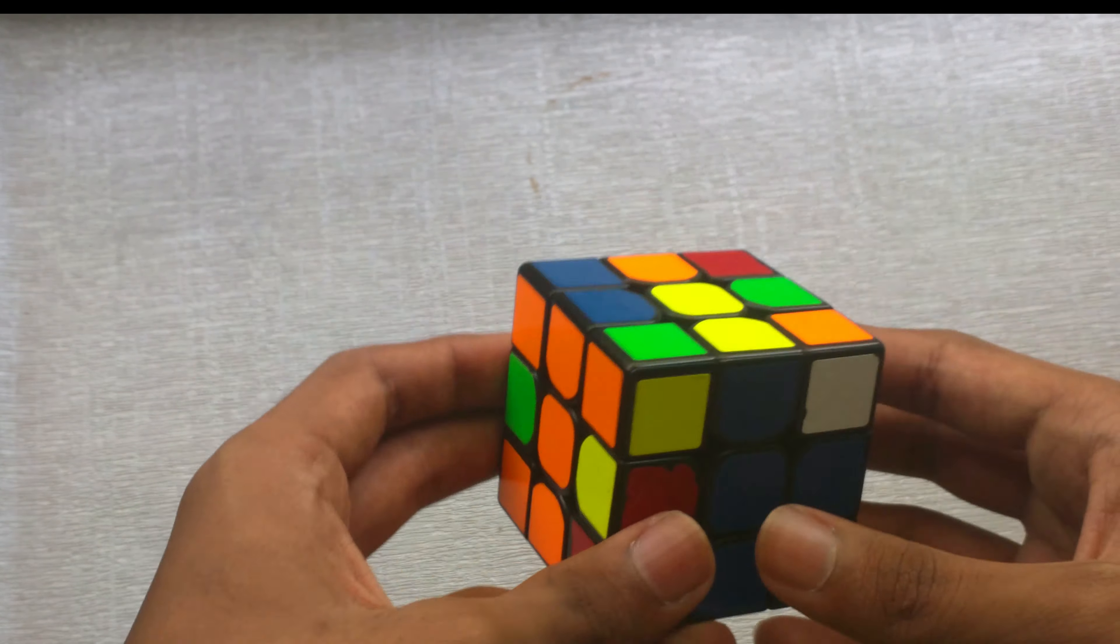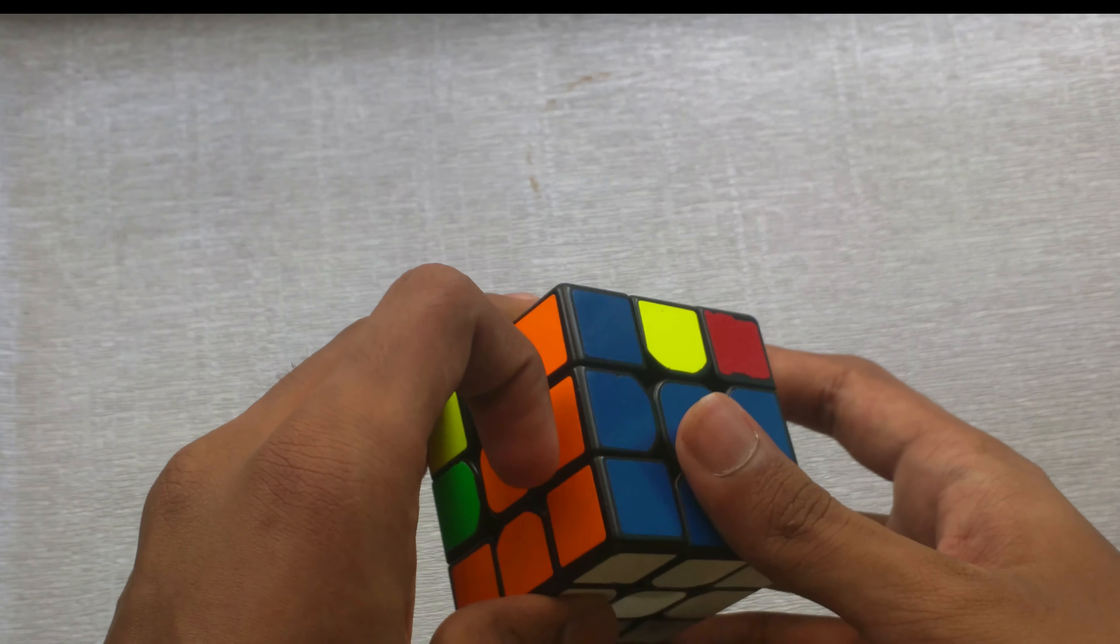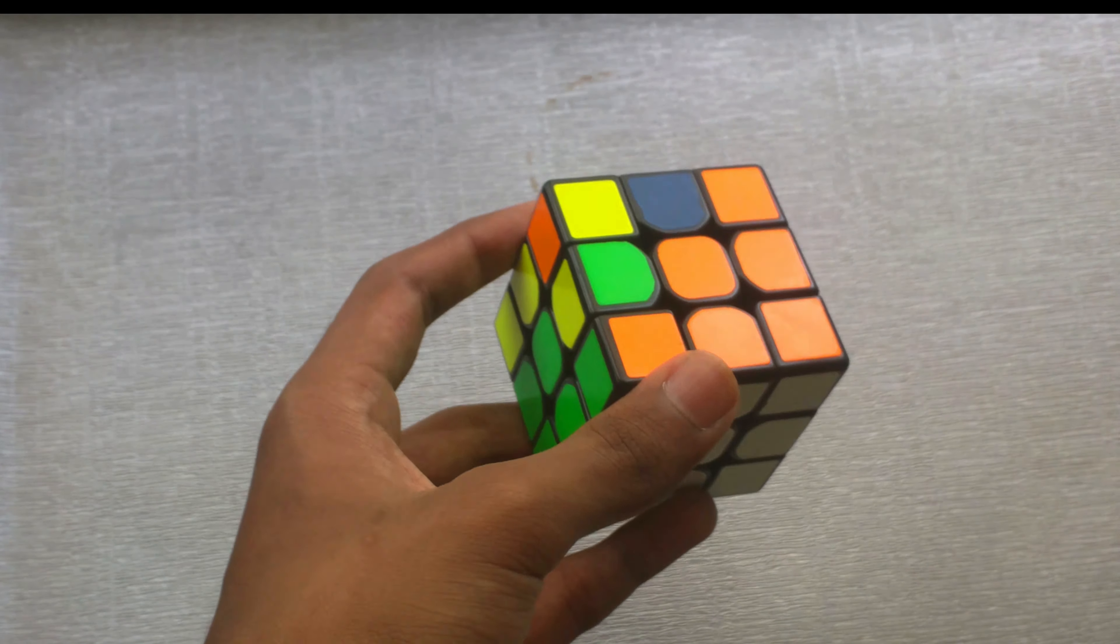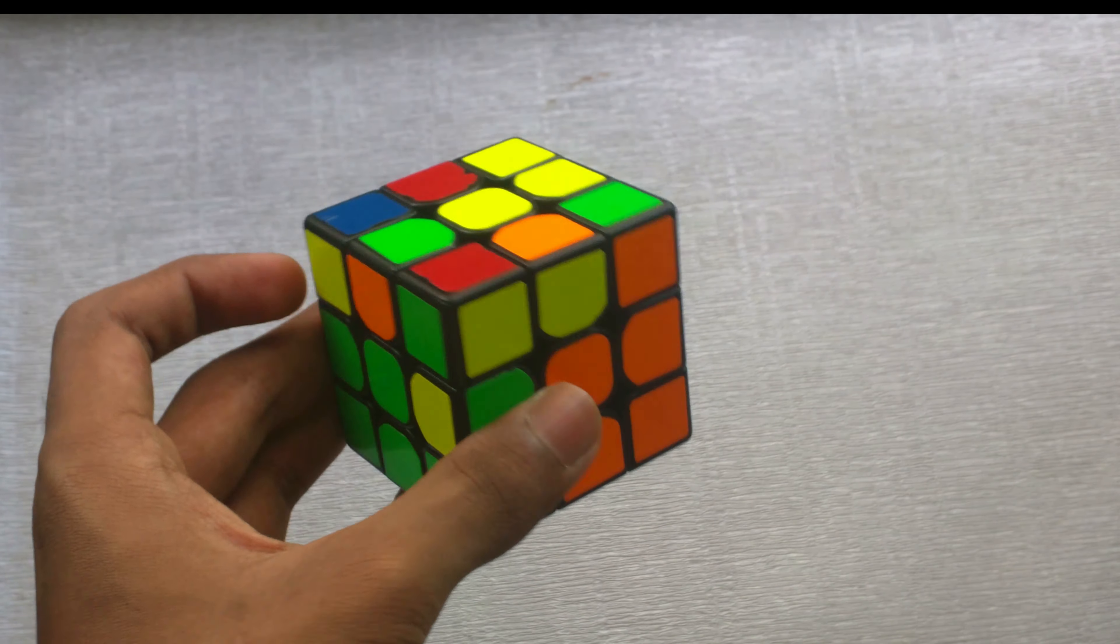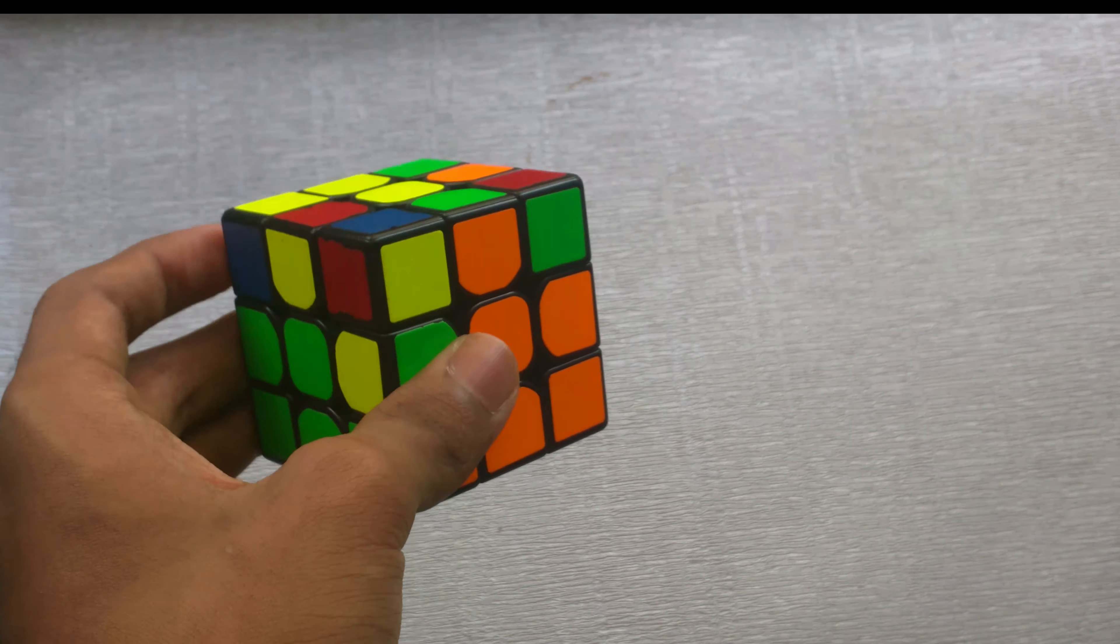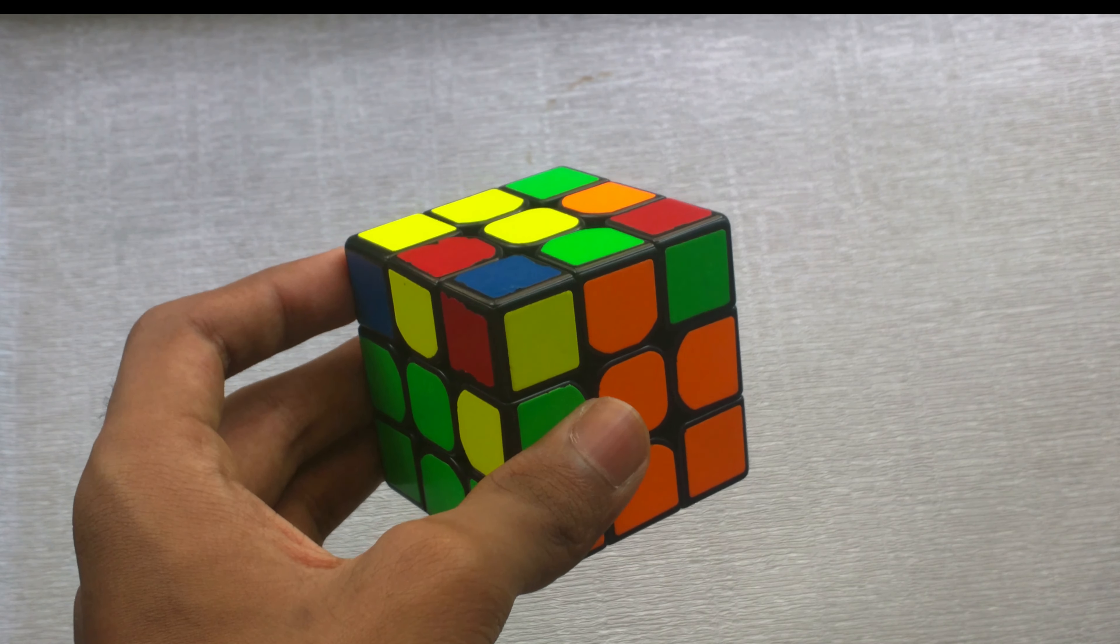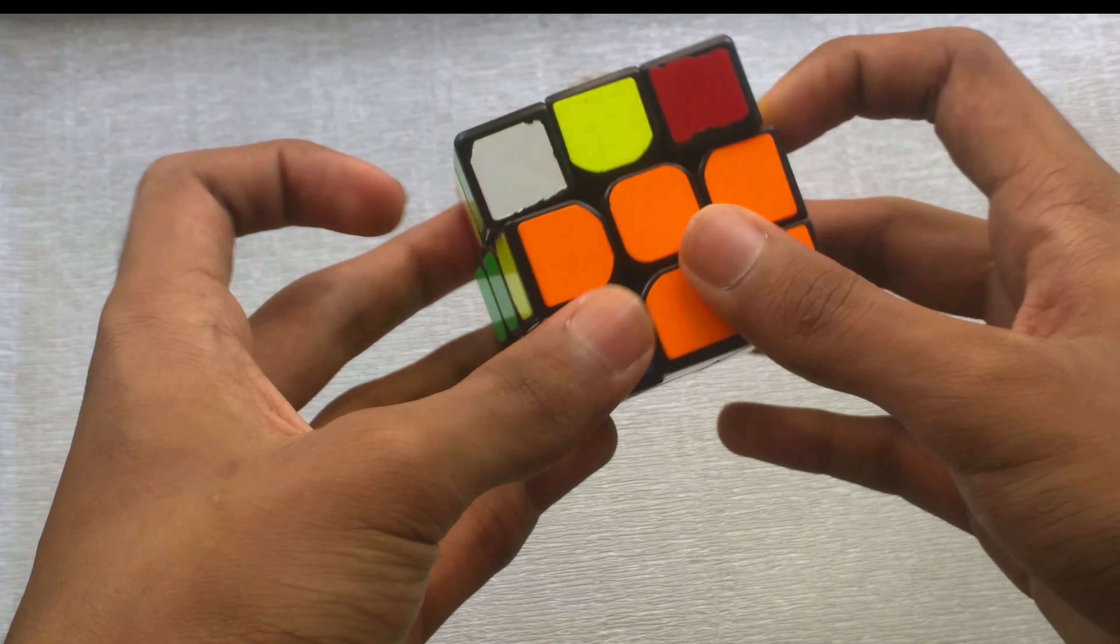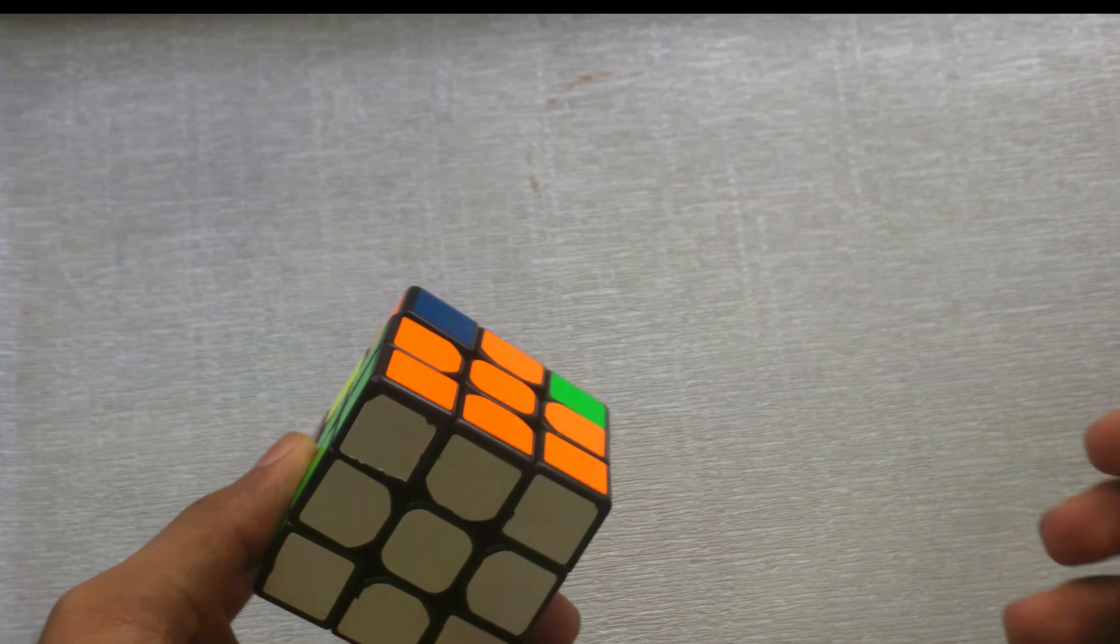Then you can usually get this case and then you can just insert it. Next, if a corner is in the bottom layer and there's no empty back slot, you can either learn some algorithms, which I will have in the description down below, or you can just use the beginner method and move it to the side, take it out, and insert it.